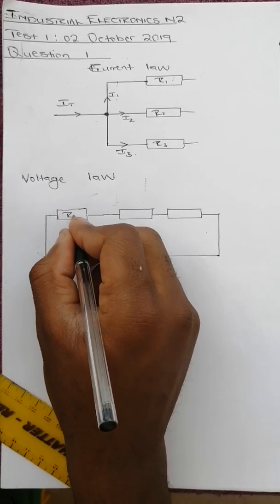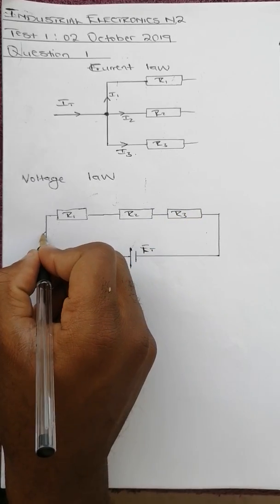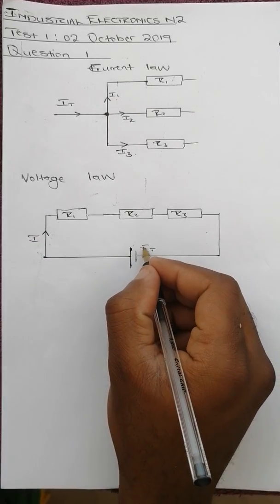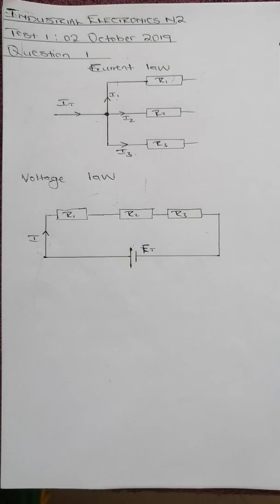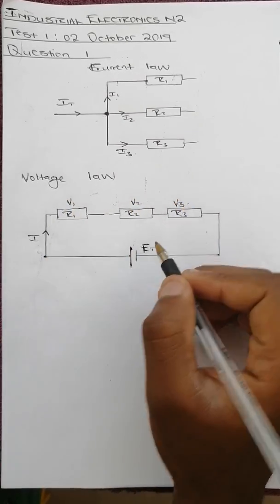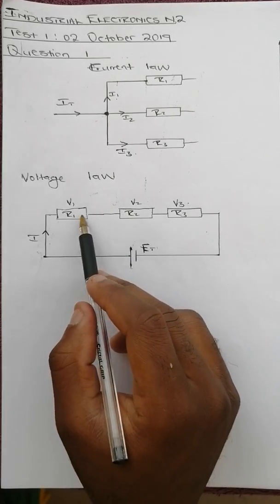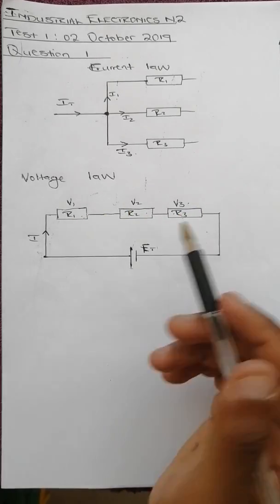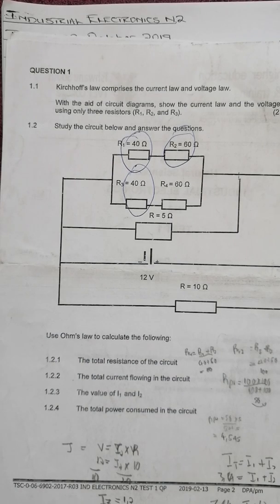Resistor 1, Resistor 2, Resistor 3. We've got I. There's our EMF, and then we've got V1, V2, V3. So this voltage law means that the total EMF equals the sum of these voltage drops, which is V1, V2, and V3. And that's it for question 1.1. Then question 1.2 —